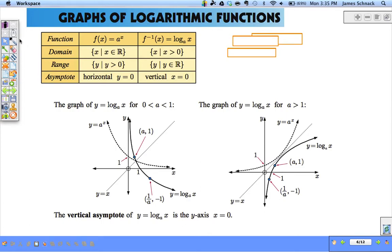If I reflect all of these points across this mirror line right here, A1 becomes 1 comma A, so on and so on.